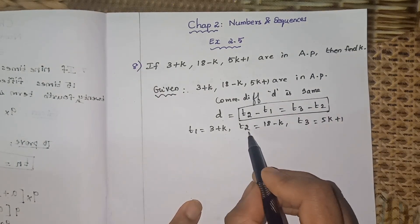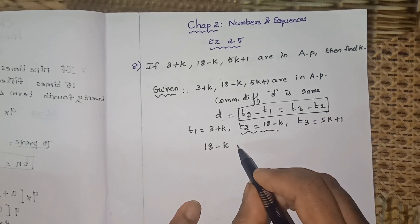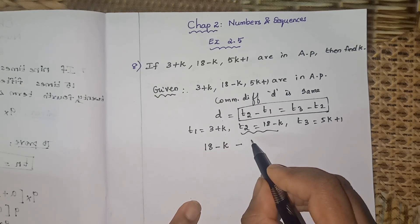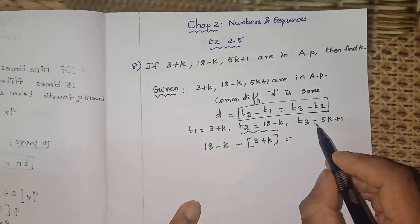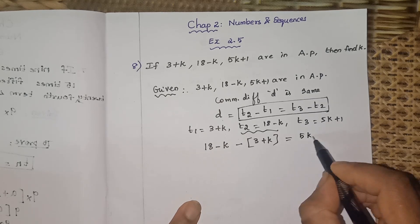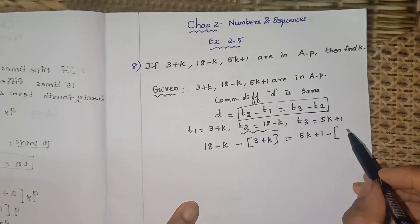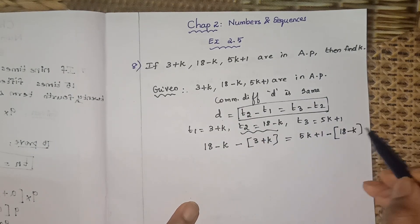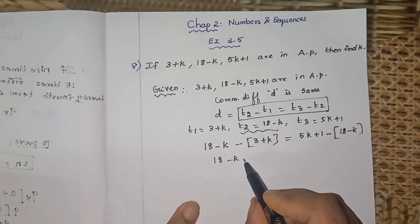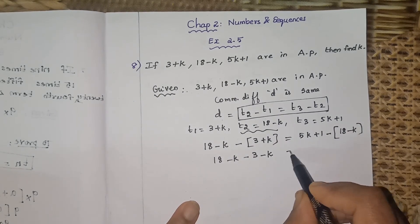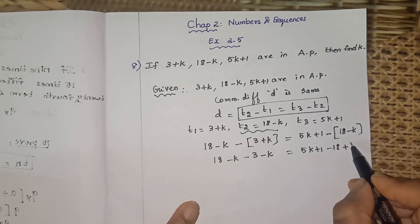So t2 minus t1 equals t3 minus t2. That gives us: (18-k) minus (3+k) equals (5k+1) minus (18-k). Be careful with the minus sign — put it in brackets. Expanding: 18 minus k minus 3 minus k equals 5k plus 1 minus 18 plus k.